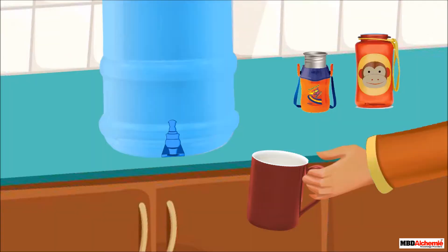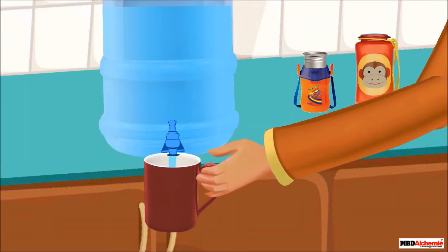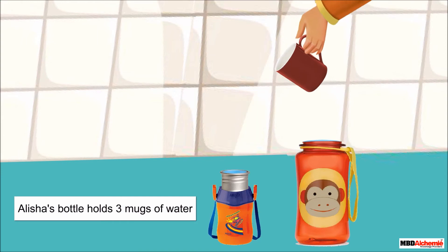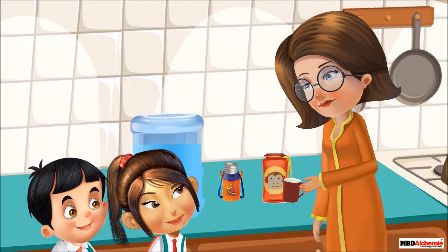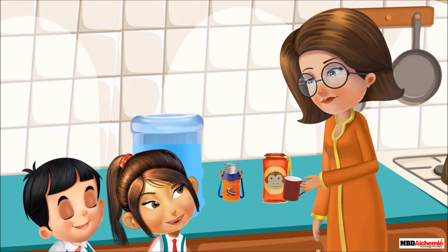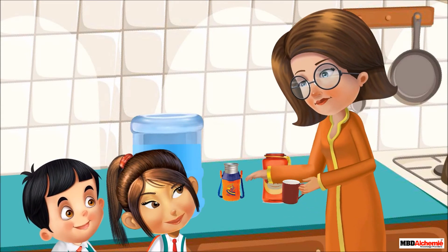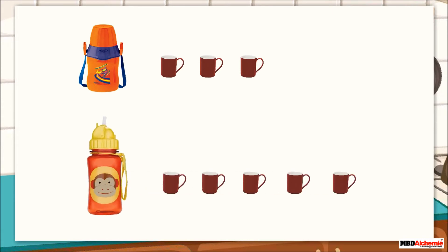She fills Alicia's bottle — one, two, three mugs. Sid and Alicia are watching her. Alicia asked, "Whose bottle holds more water?" The mother replied, "Alicia, your bottle holds three mugs of water, whereas Sid's bottle holds five mugs of water."